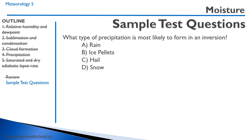Question: what type of precipitation is most likely to form in an inversion? Remember, an inversion is when temperature increases with altitude, so it's warm up high. If you have rain falling into colder air below, the answer is ice pellets. Rain falls, hits the cold air layer, and comes down as solid chunks of ice. Hail is not correct because hail is not from an inversion — it's from thunderstorms and unstable air. And snow is not correct either.